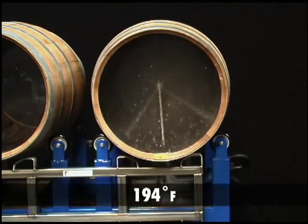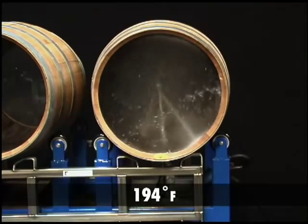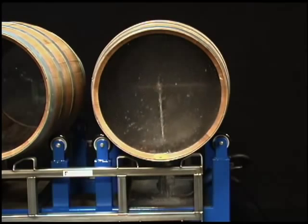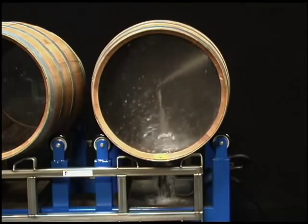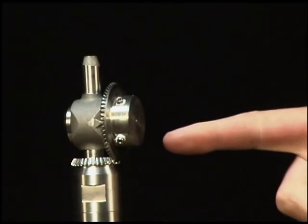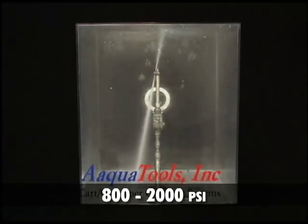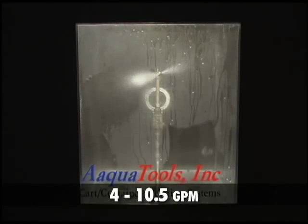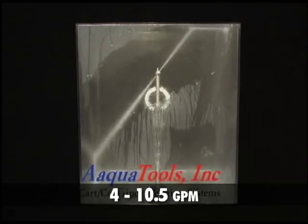It's rated for temperatures up to 194 degrees, perfect for sterilizing containers in the food and beverage industries. The 360 can be configured for two or four nozzles and support a pressure range from 800 to 2,000 psi. The flow rate is four to ten and a half gallons per minute.